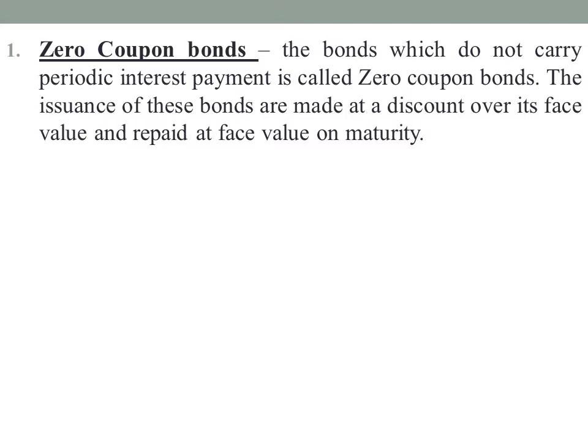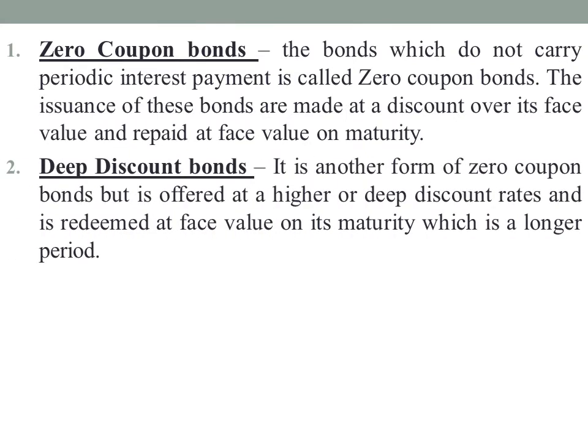These bonds are issued at a discount over their face value. For example, if the face value is 100 rupees, the bond may be issued at a discount of 75 rupees. At maturity, the face value of 100 rupees is paid, so the difference of 25 rupees is the benefit. These types of bonds are known as zero coupon bonds.